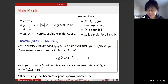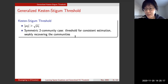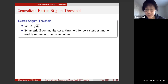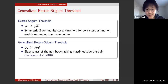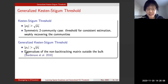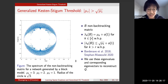The condition |mu_r| > sqrt(mu_1) is called the generalized Kesten-Stigum threshold. The original Kesten-Stigum threshold in the stochastic block model context states that the second eigenvalue's magnitude exceeds the square root of the first, and has been extensively studied as the threshold for consistent community detection and weak recovery.